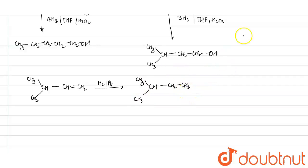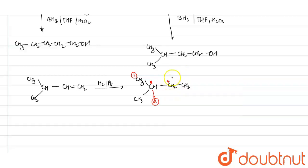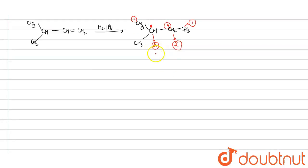Now, this alkane on monochlorination gives how many compounds? Let's check. One compound can form at the terminal CH3. At the chiral carbon position, it can form two compounds since it is a chiral carbon. And at another position, also two monochloro-derivative compounds. And from the last carbon, one compound. So total compounds will be 2 plus 2 plus 1 plus 1 equals 6 compounds.